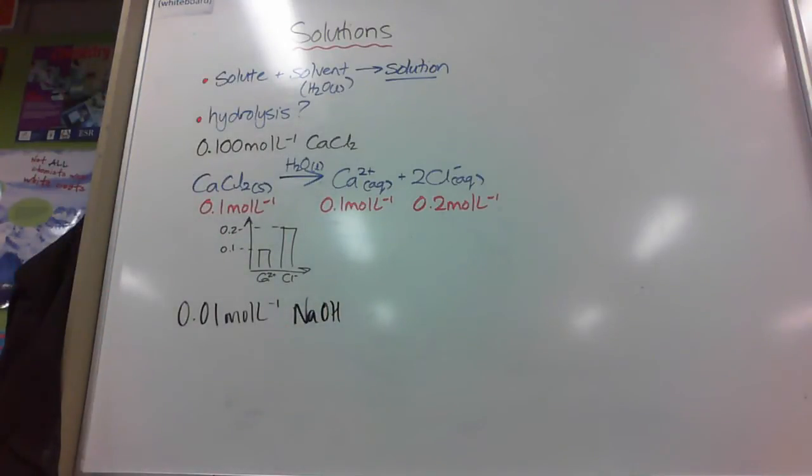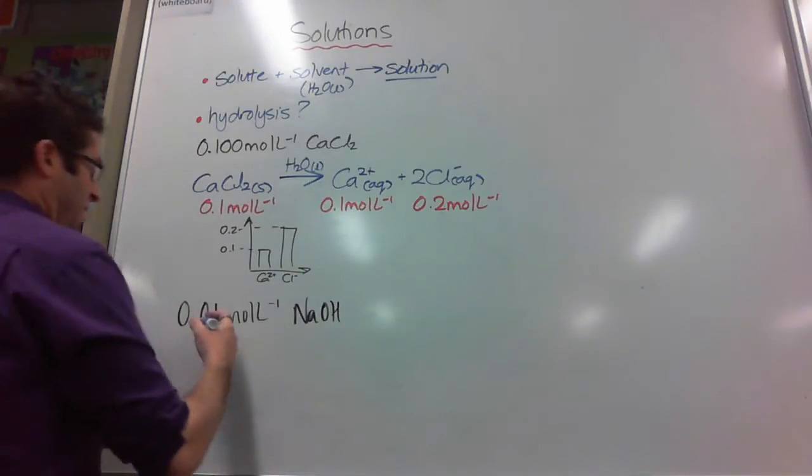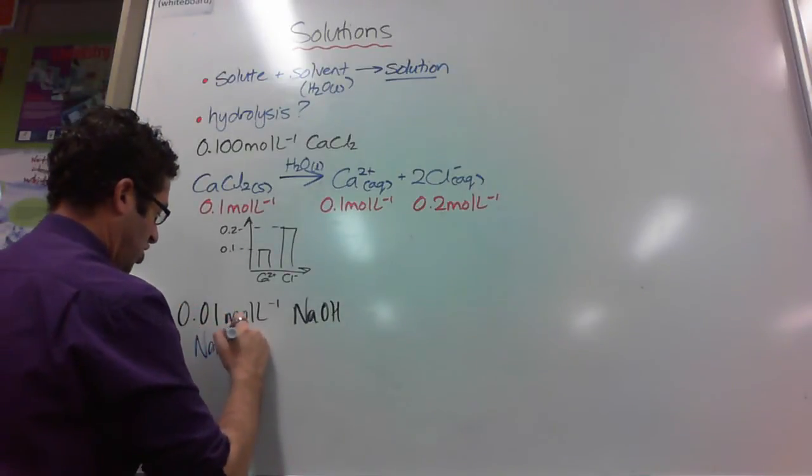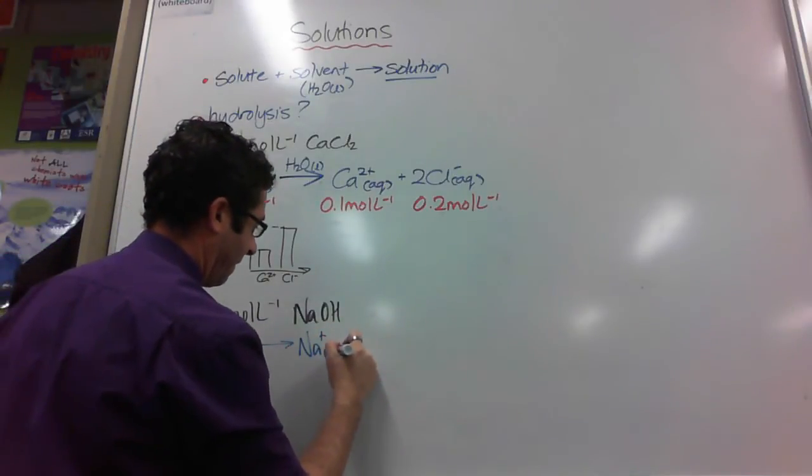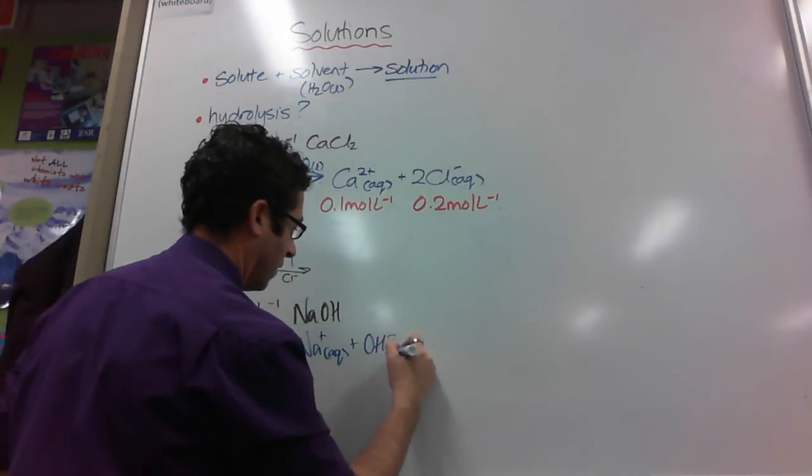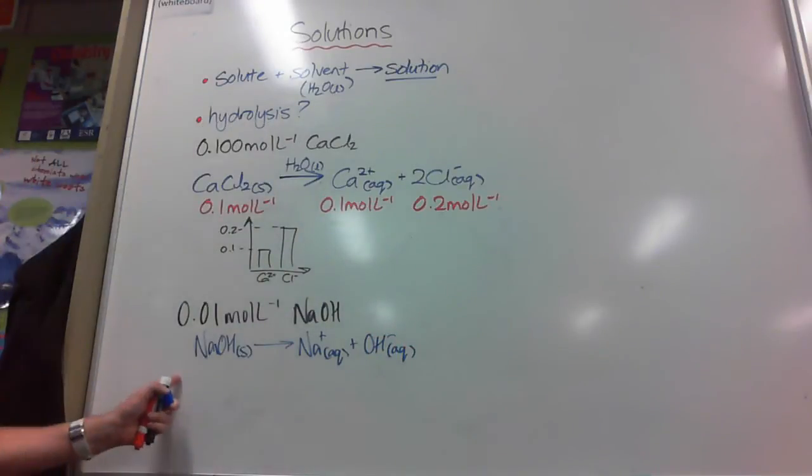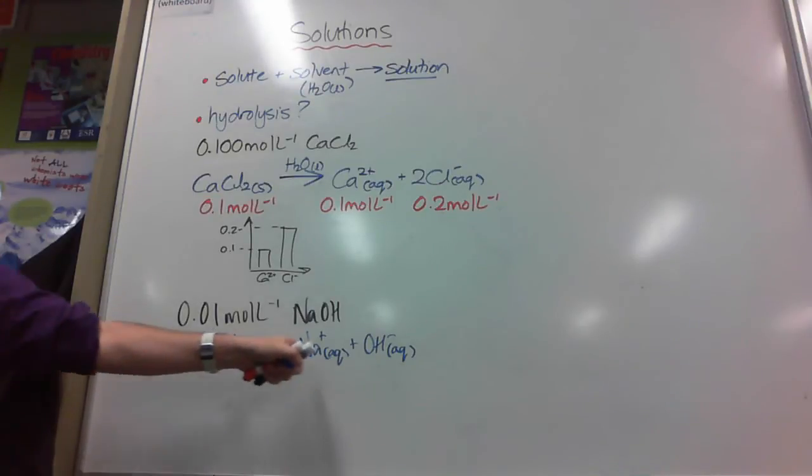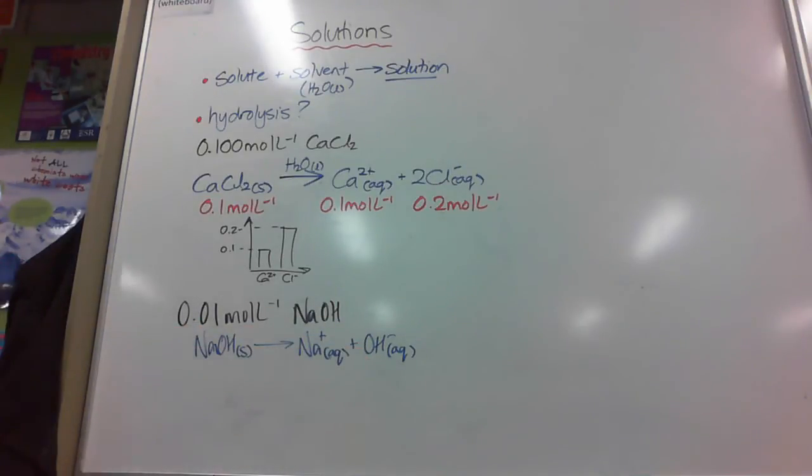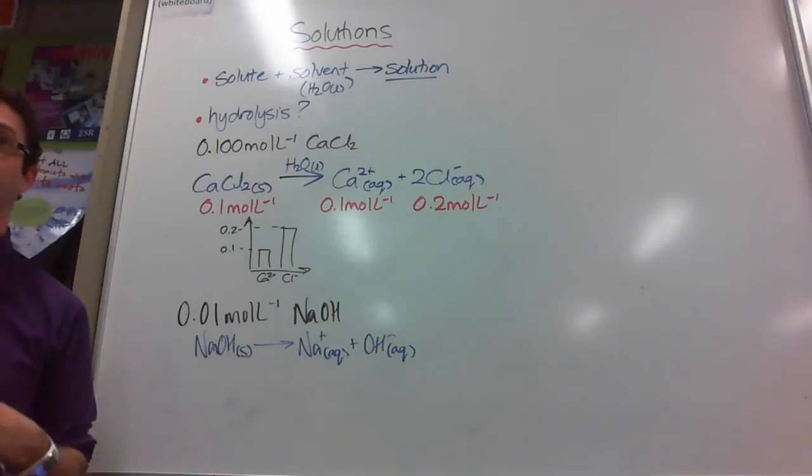Just like this one, we're going to have this dissolving so we can show it really easily as NaOH making these two ions. If that's 0.01 moles per litre, that's 0.01 and that's 0.01. Now with the stuff you learnt last year, you'd be able to work out the pOH of this, go 14 minus the pOH to give me the pH of the solution.